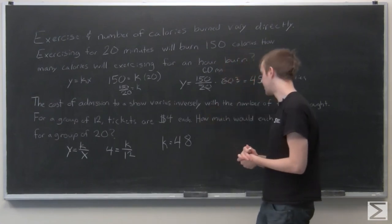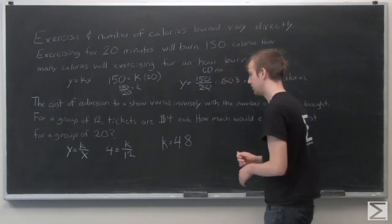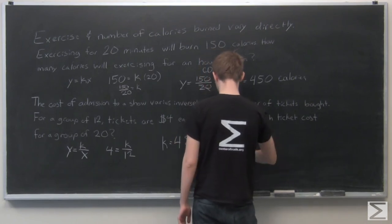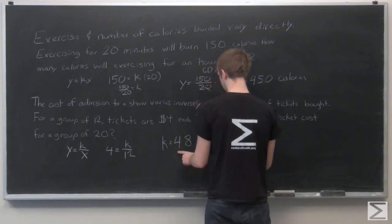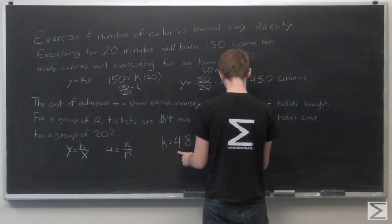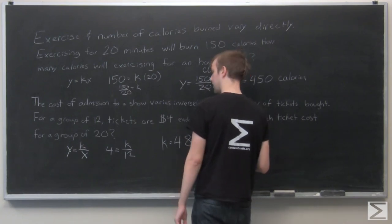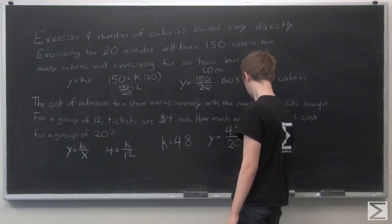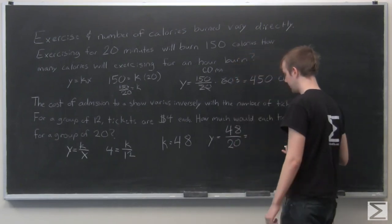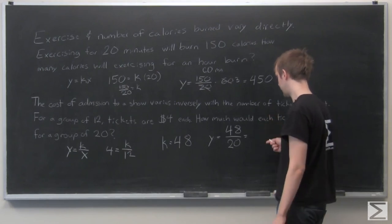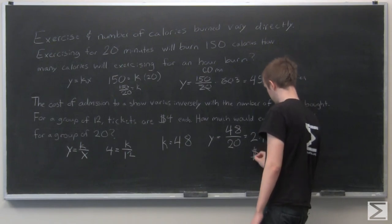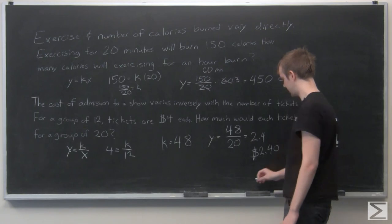Now, how much would each ticket cost for a group of 20? Let's use the same formula. Y equals, K equals 48, over, and our X is now 20. And 48 divided by 20, that's 24 over 10, so that's 2.4. So tickets would cost $2.40 per person.